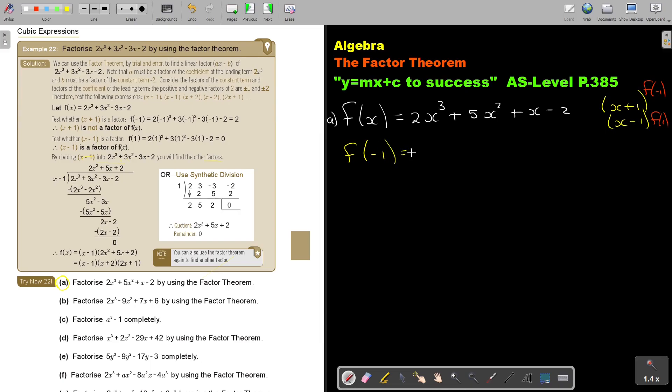So, if I minus 1, it's going to be 2 minus 1 cubed plus 5 minus 1 squared plus minus 1 minus 2. And that, now, if I, this is negative, so it's negative 2, positive, so plus 5, minus 1, minus 2.